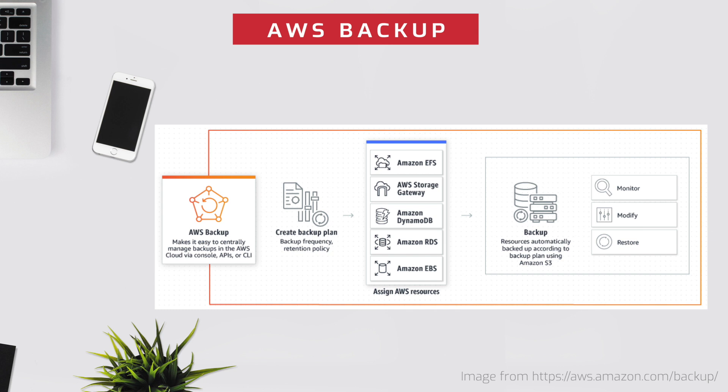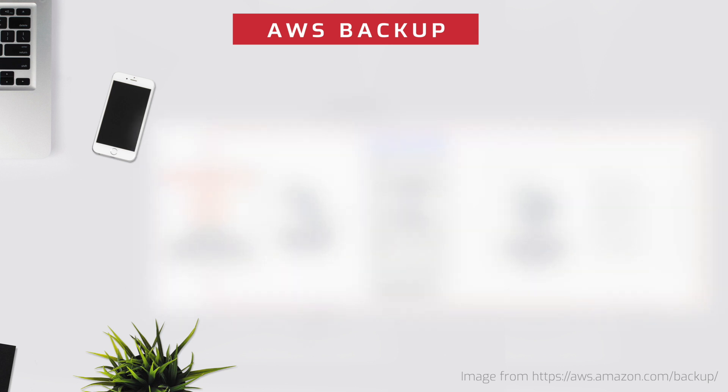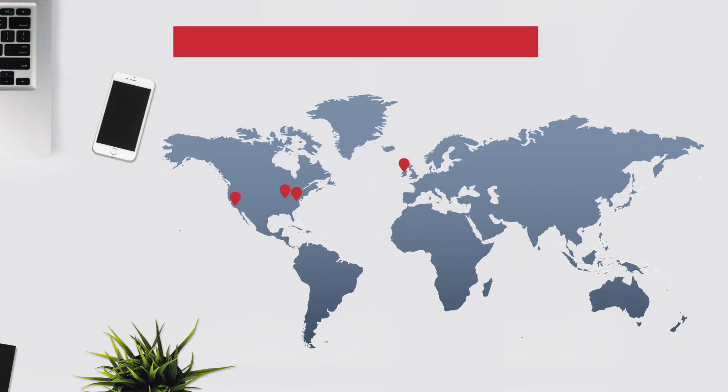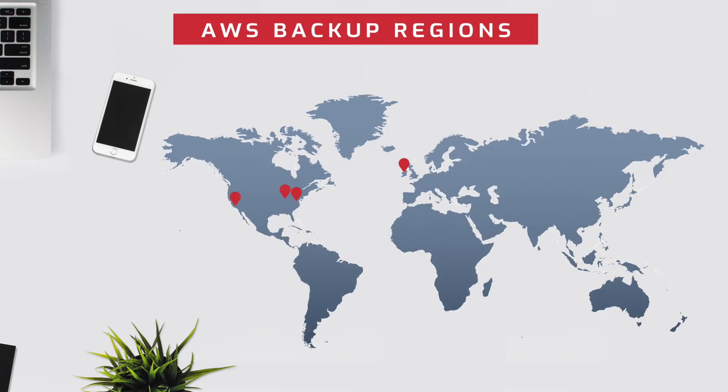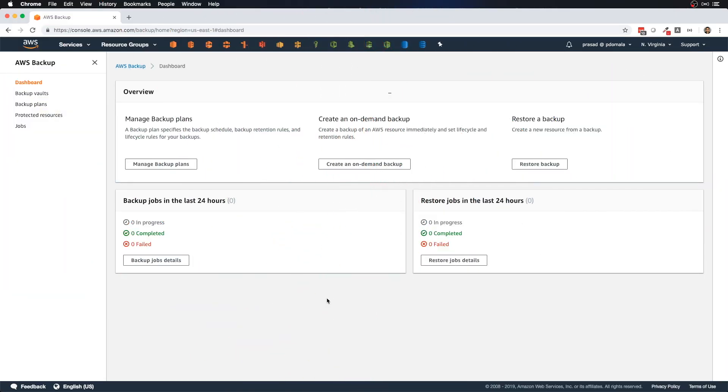In today's demo I'll show you the process to backup EBS, but you can apply the same process to other supported AWS services as well. Currently AWS Backup is available in US East 1, East 2, EU West 1, and US West 1 regions. I am on my AWS console logged into US East 1 region.